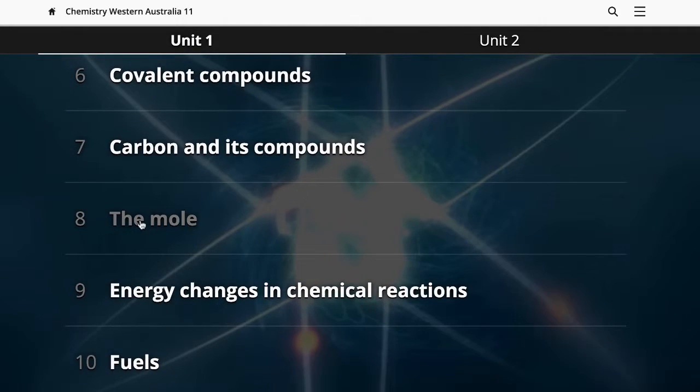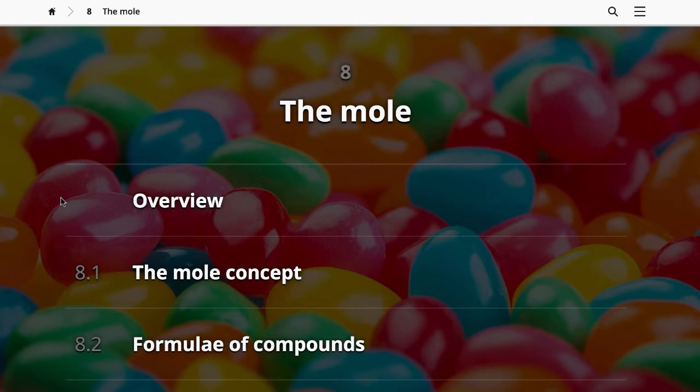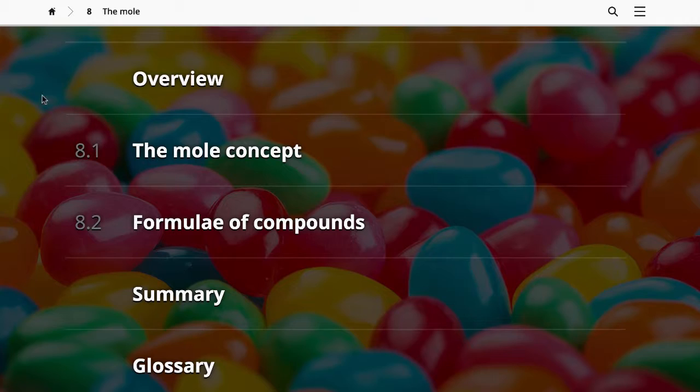First, you'll need to select a chapter from the table of contents. In your science lightbook, every chapter has an overview, modules, a summary and a glossary.